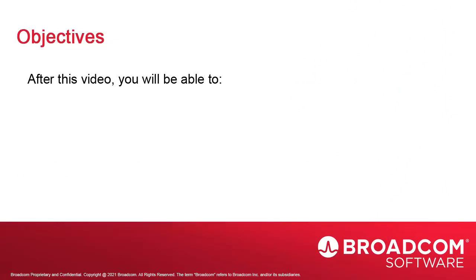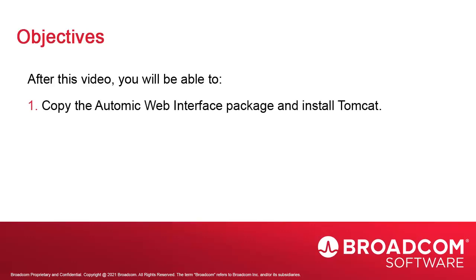This video shows how to install the Atomic Web Interface, or AWI. Atomic's UI is web-enabled, which means you can access AE from any workstation with a browser and the proper credentials. We need a web server, although a self-contained option is also supported. We'll discuss this in a moment. We'll copy the Web Interface directory from the install package and then install Tomcat, which is open source and multi-platform.